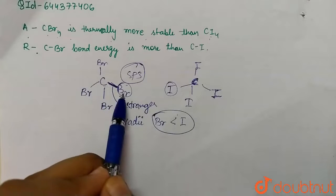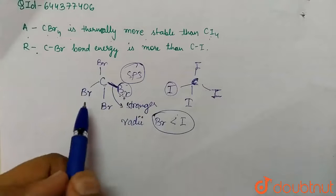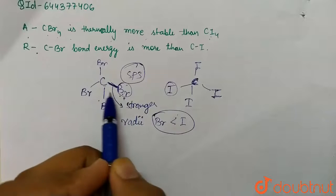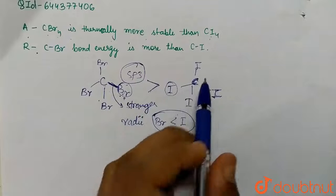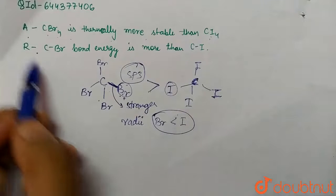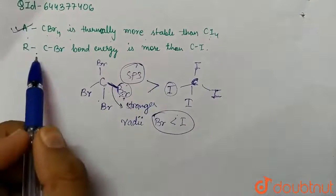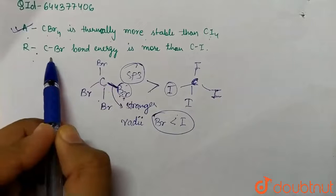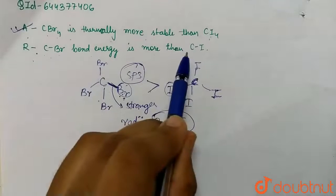Since this is a stronger bond, the C-Br bond will be more stable. So this CBr4 compound is thermally more stable than CI4 compound. Therefore, the assertion is correct.